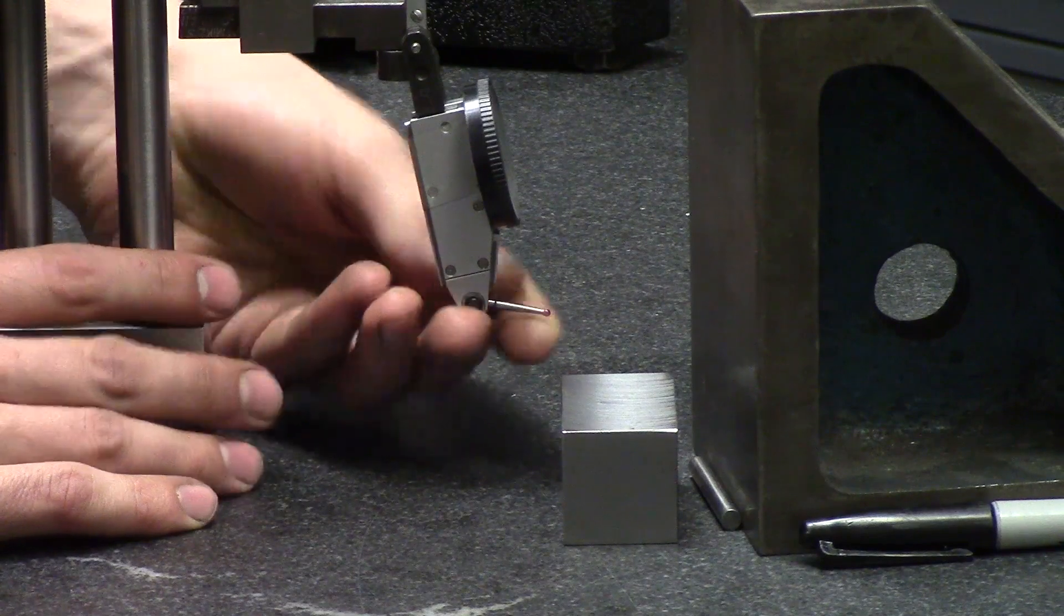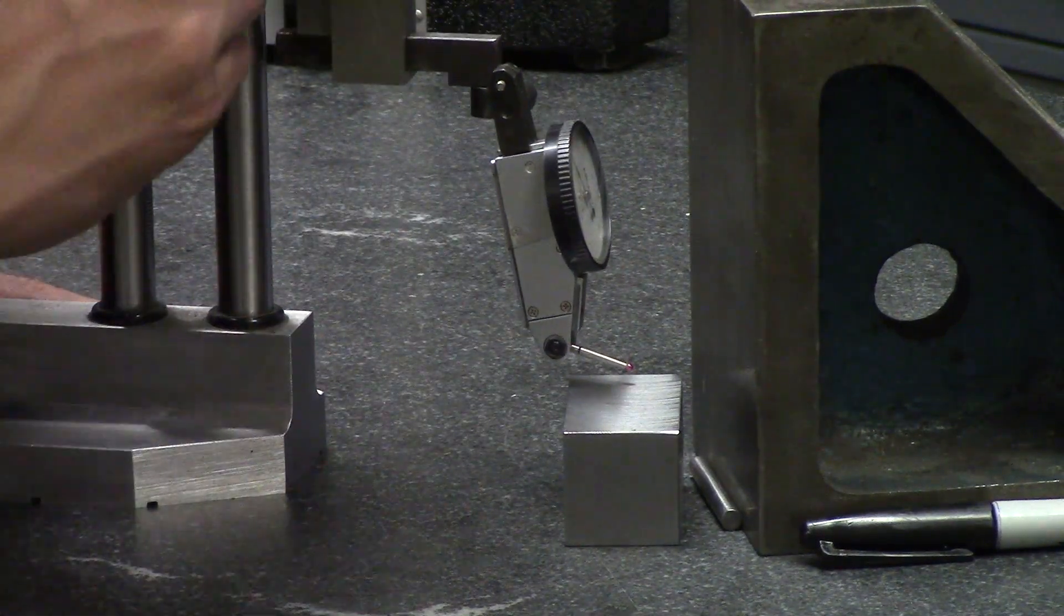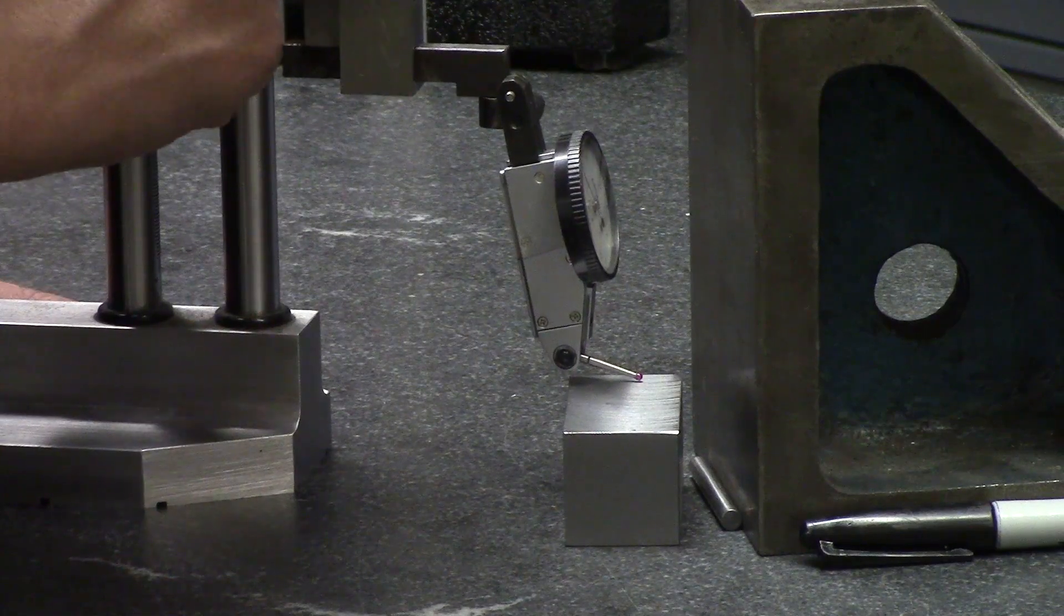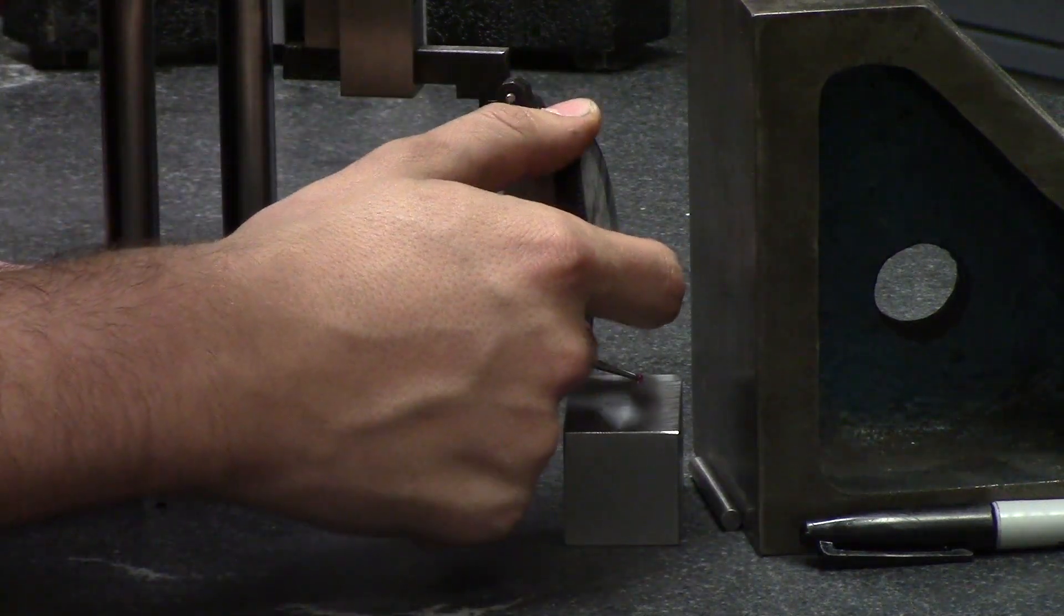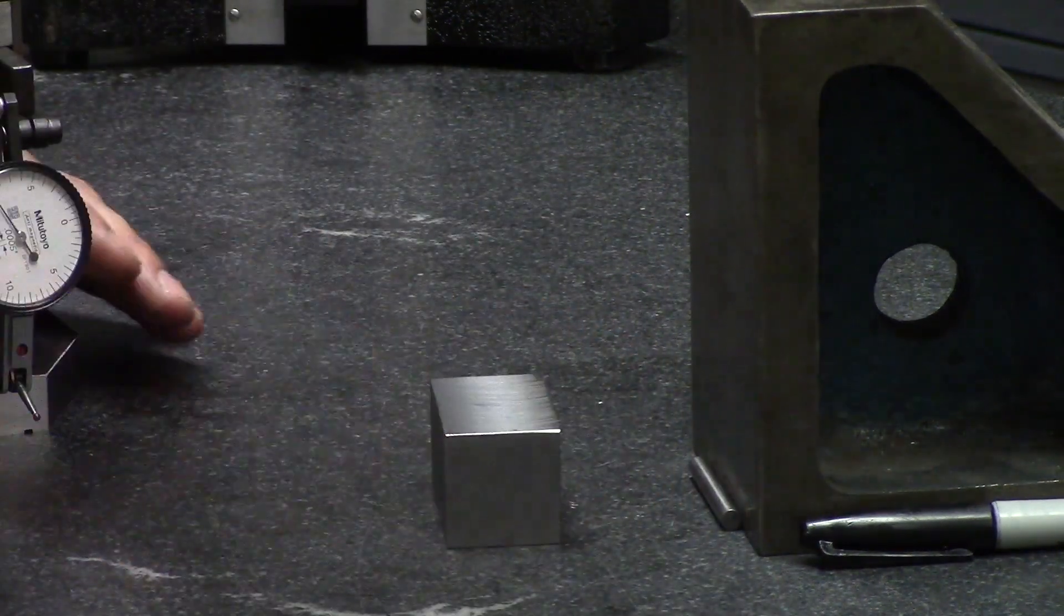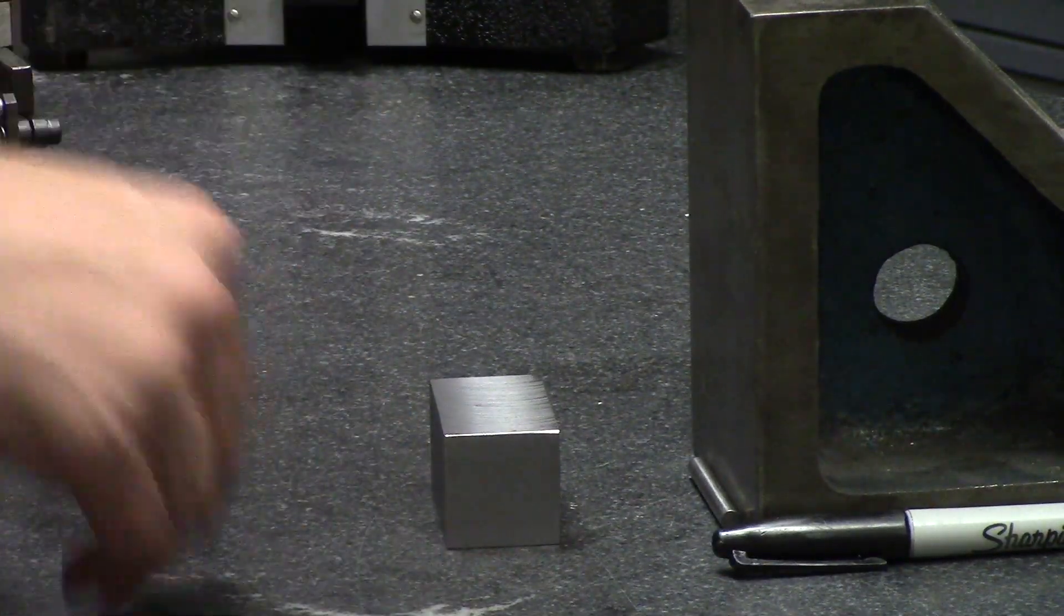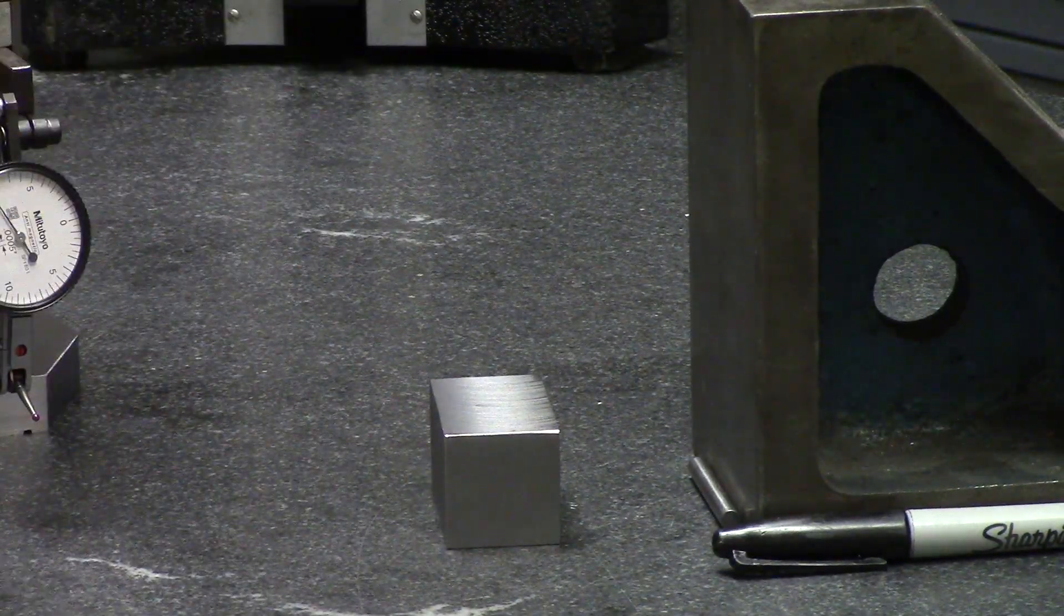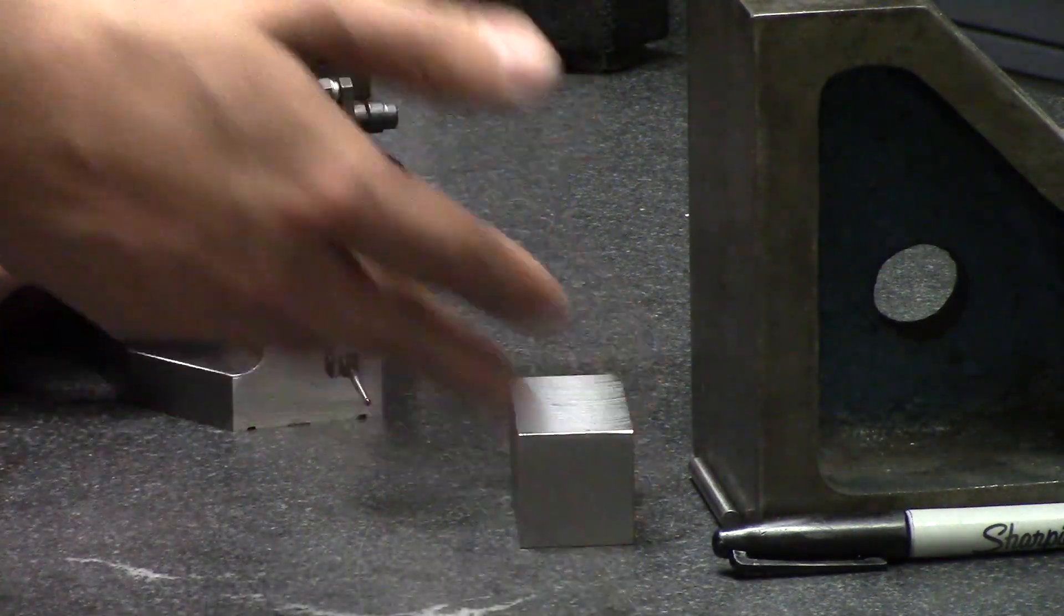And so what you want to do is position it to where your stem will touch the part. But your actual indicator will not because it'll just bump and mess it up. So first thing we're going to do is check for parallel. And one more thing I forgot to add is you'll need a marker because you're going to write zero on one side where you're going to set your indicator and then you're going to write the dimensions that you read on the other side of the part.